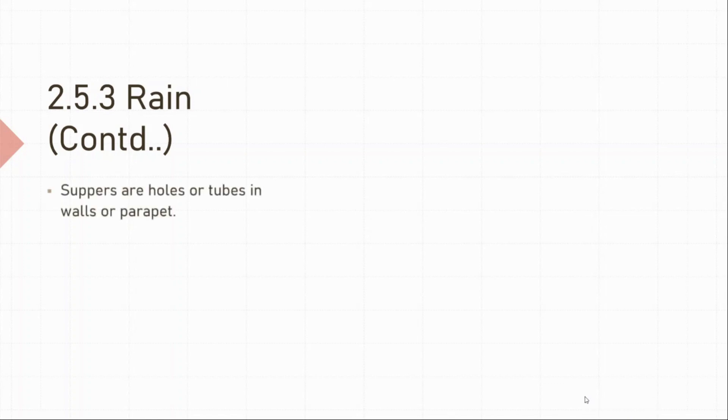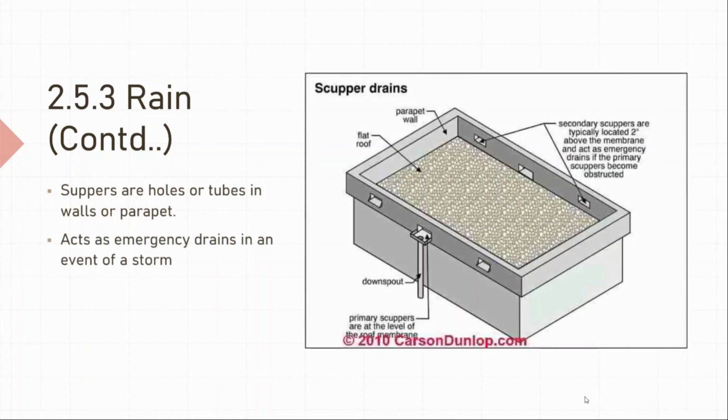Scuppers are holes or tubes in walls or parapet. It acts as an emergency drain in an event of a storm. See this image to your right. You can see there are holes made on the parapet. These are called scuppers. It lets more water pass through the roof in very less amount of time. Thus, it helps prevent ponding in an event of a storm. You can find more information on rain loads in Chapter 8 of ASCE 7 which I will attach with this lecture.